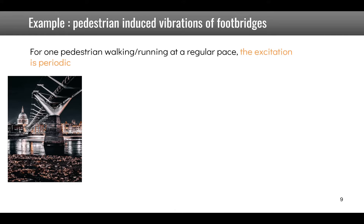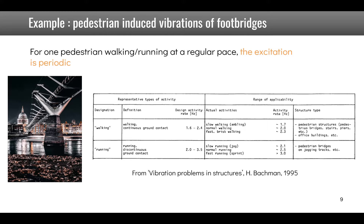For a pedestrian walking or running at a regular pace on a footbridge, the excitation is periodic. When walking, the activity rate is around 2 Hz; when running, it can go up to 3.5 Hz. There are also differences for slow walking, fast walking, jogging, and fast running. So the frequency content of the excitation is already relevant here.